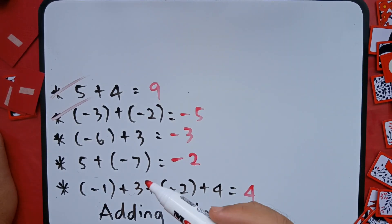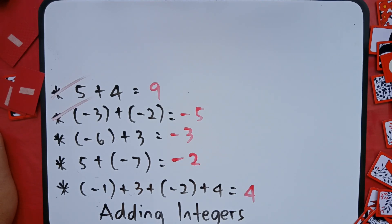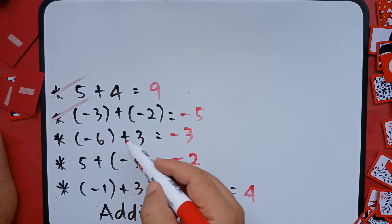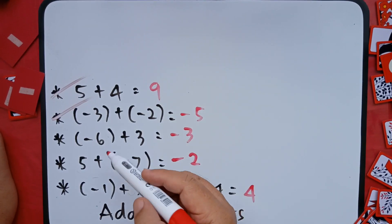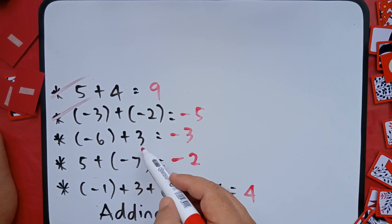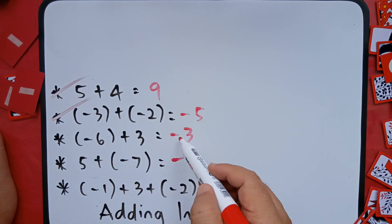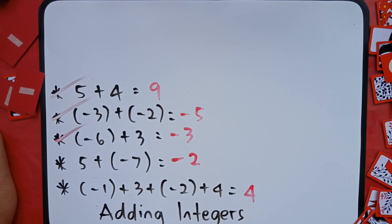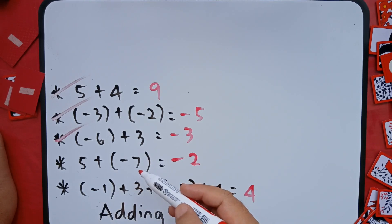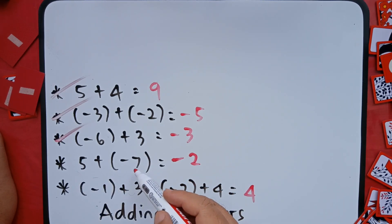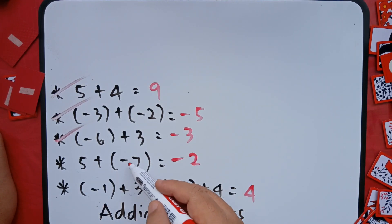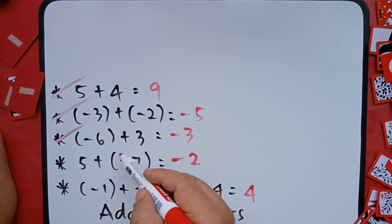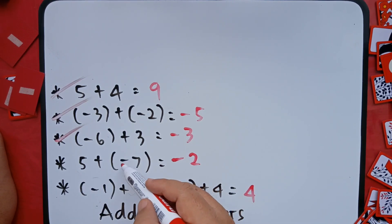Second rule: integers with different signs — you have to subtract and copy the sign of the greater number. So negative six plus positive three — different signs, subtract: six minus three is three, then copy the sign of the greater value. Six is greater than three, so copy the negative sign — negative three. Check. Next: five plus negative seven — different signs, subtract the absolute value: seven minus five is two, copy the sign of the greater number. Seven is greater than five, so copy negative — negative two. Check.